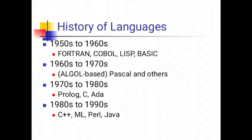History of languages: From the 1950s to 1960s, Fortran, COBOL, Lisp and Basic languages were used. From the 1960s to 1970s, Pascal and other Algol-based languages were used. From the 1970s to 1980s, Prolog, C and Ada languages were used.